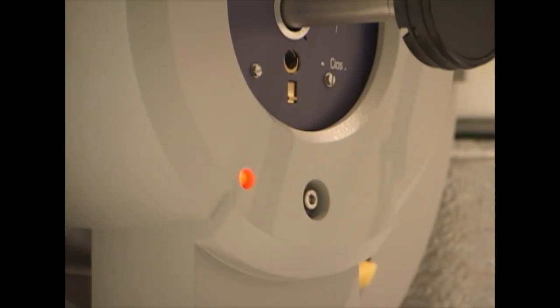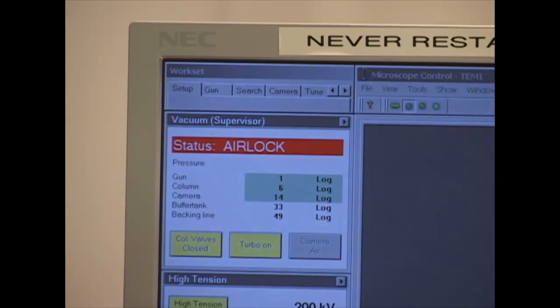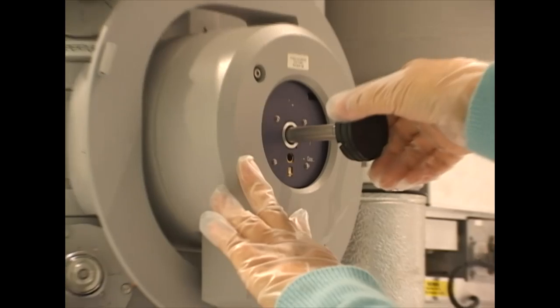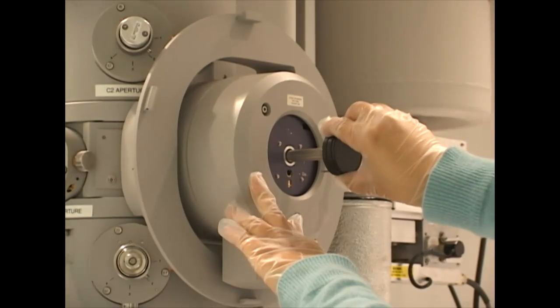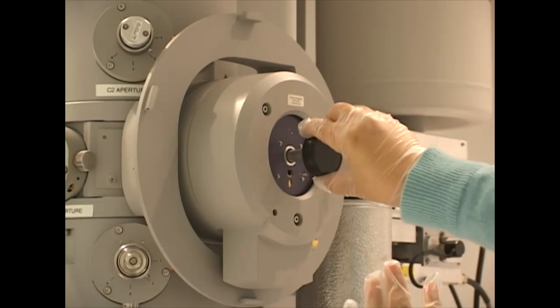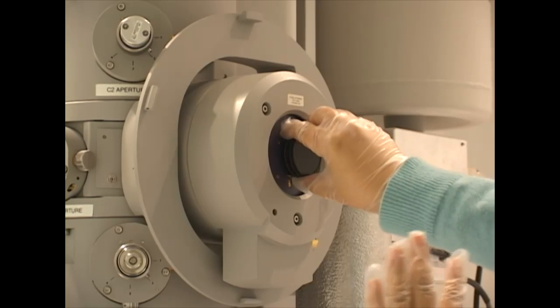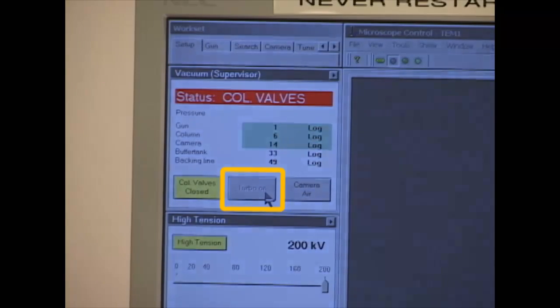When the light goes out and the airlock status changes to Column Valves, the sample chamber has been evacuated. Now, turn the holder counterclockwise and hold it as the vacuum sucks the holder slowly in. Now, turn off the Turbo Pump.